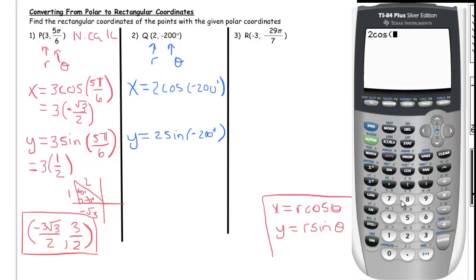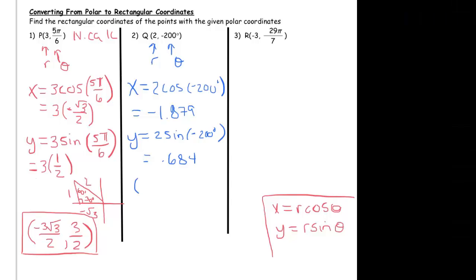And when you do that in the calculator, you get for your x-coordinate, negative 1.879. And for your y-coordinate, you get 0.684. So, in rectangular form, this 2 negative 200 degrees, is negative 1.879, comma, 0.684.